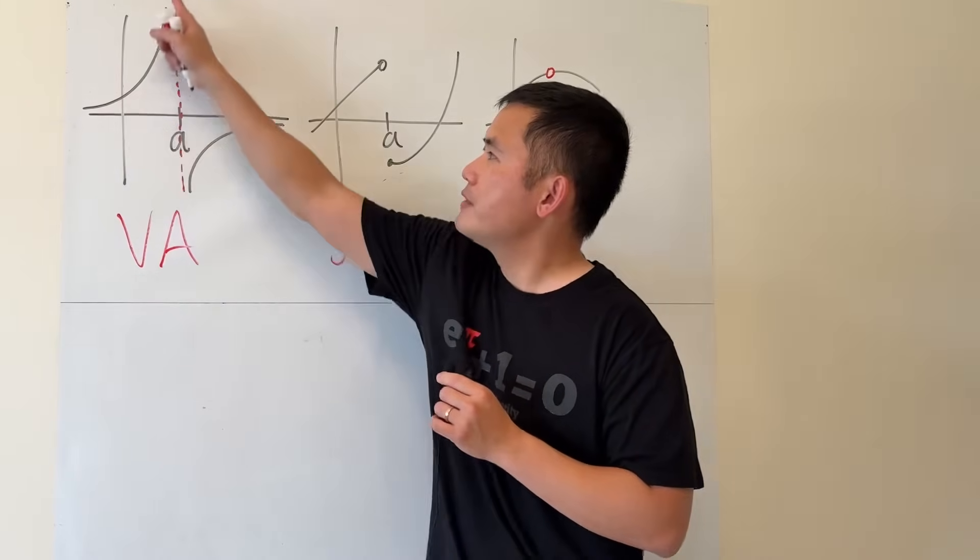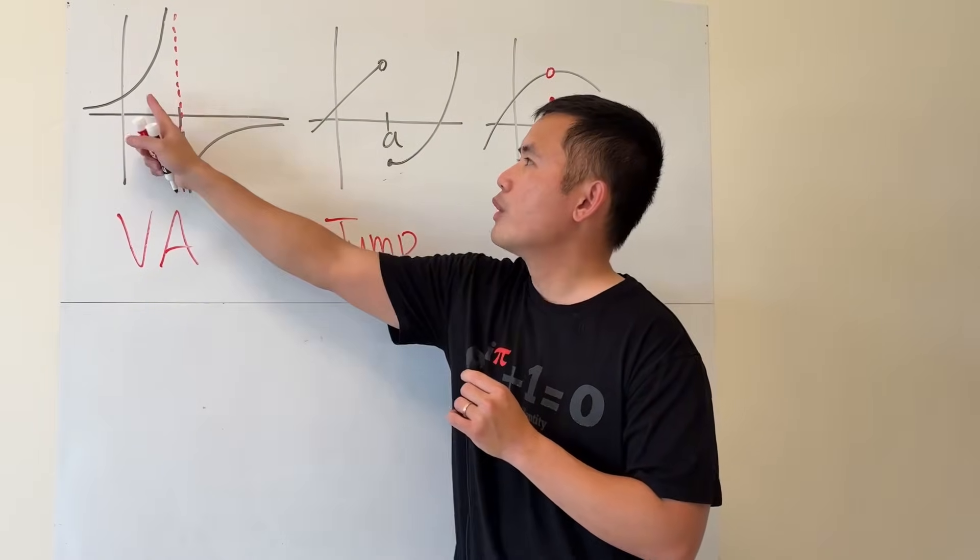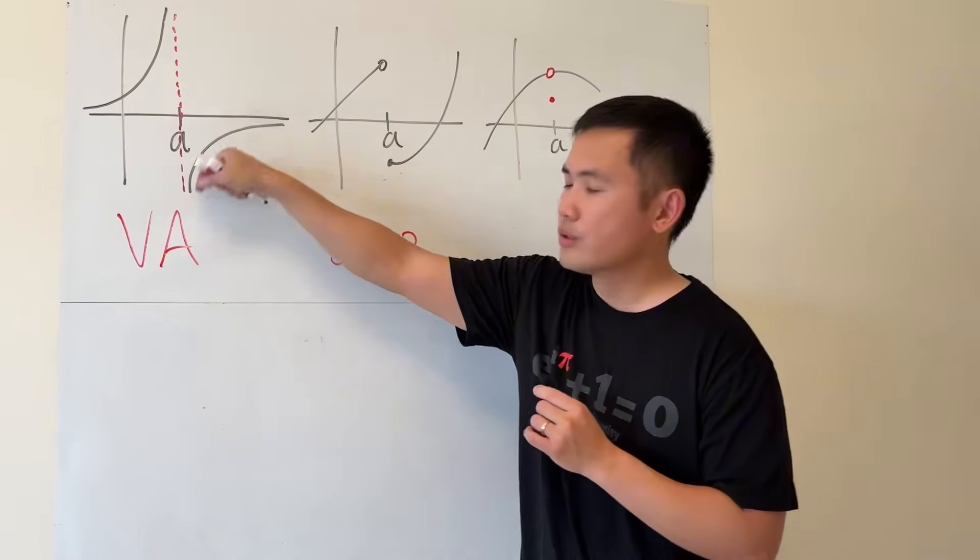It could be both sides going to positive infinity, or both sides going to negative infinity, or one goes to positive infinity, the other one goes to negative infinity.